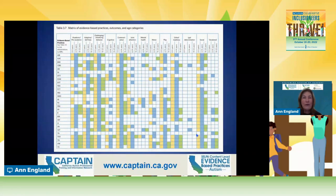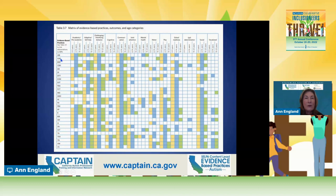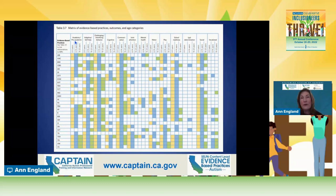On the CAPTAIN website, you can find a matrix under the resources—it's a one-page view of those evidence-based practices. Across the top you'll see domain areas, meaning these evidence-based practices may help address these areas. Down the left-hand side are the abbreviations of the 28 evidence-based practices. So you might say, 'Oh, look—AAC. It works with this age group for academic and pre-academic planning.' These are the things your local CAPTAIN cadre can spend a whole hour and a half teaching you about.